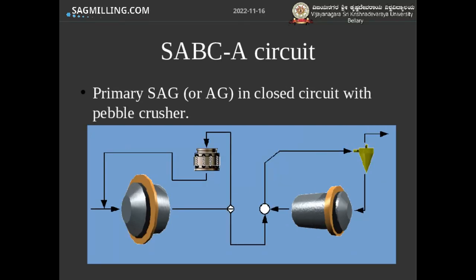This circuit shows basically the same flow diagram except that the screen oversize — the pebble fraction — goes to a cone crusher, and the cone crusher product then gets returned back to the SAG mill. A characteristic of SAG mills is that they are very efficient at turning angular particles into round particles, while cone crushers are very efficient at turning round particles into angular particles. This synergy can dramatically increase the energy efficiency of the grinding circuit.